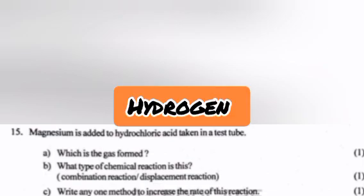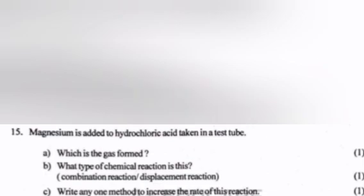Question 15: Magnesium is added to hydrochloric acid taken in a test tube. A. Which is the gas formed? Answer: Hydrogen. B. What type of chemical reaction is this? Answer: Displacement reaction.